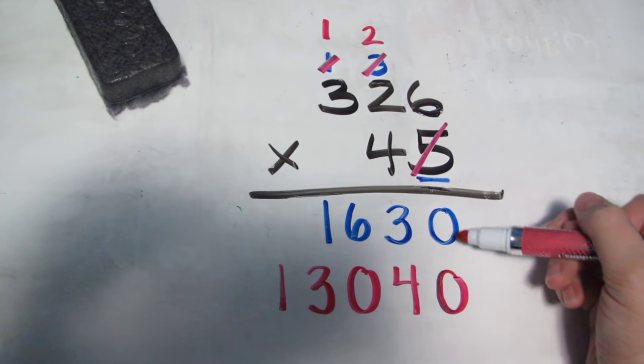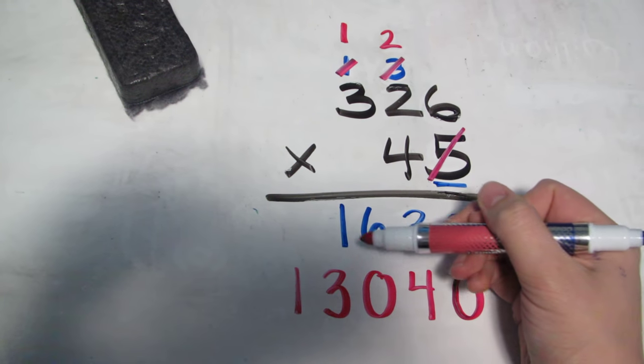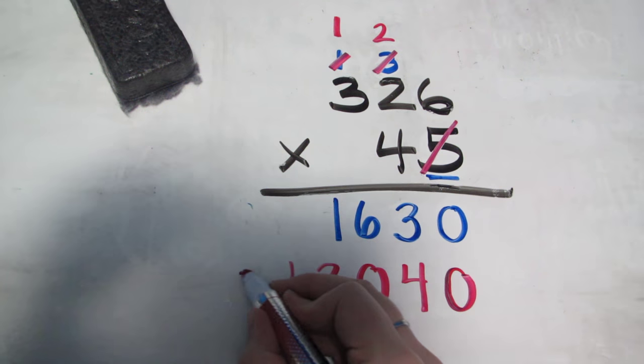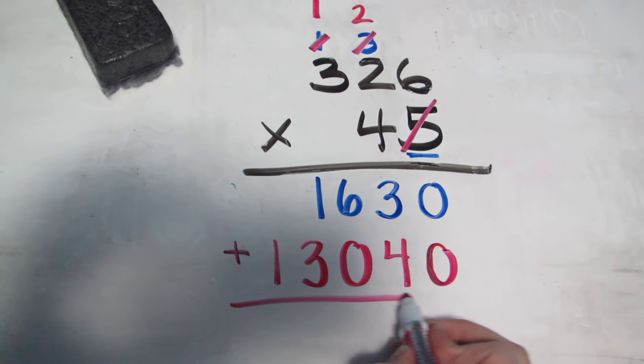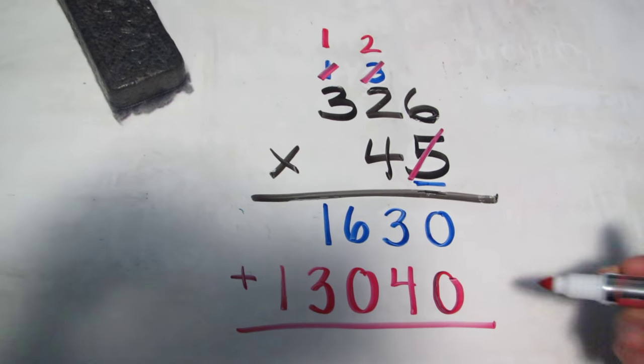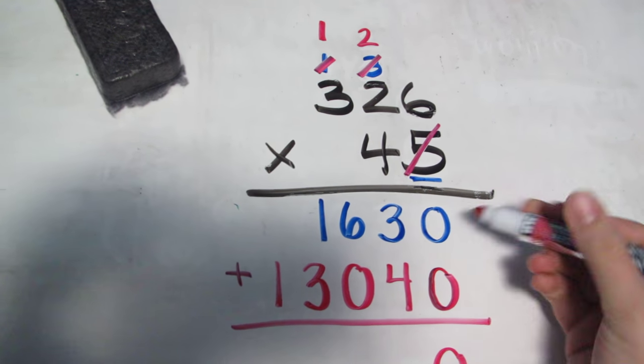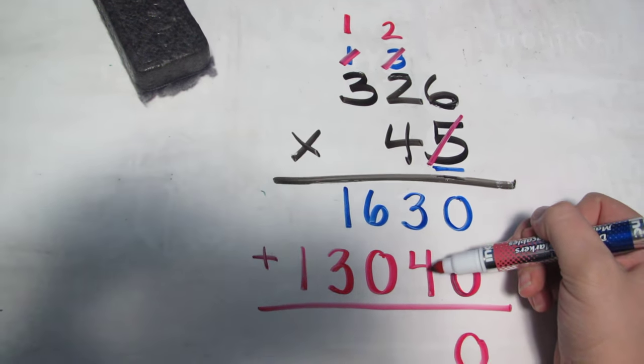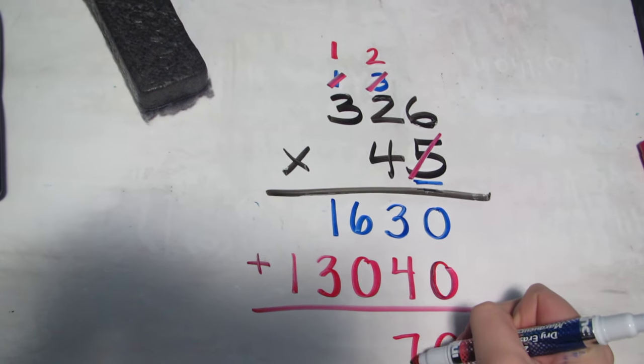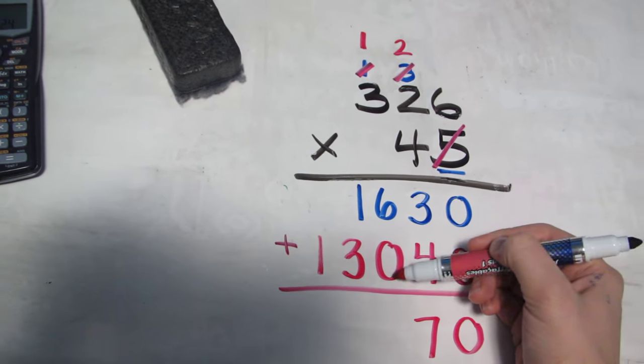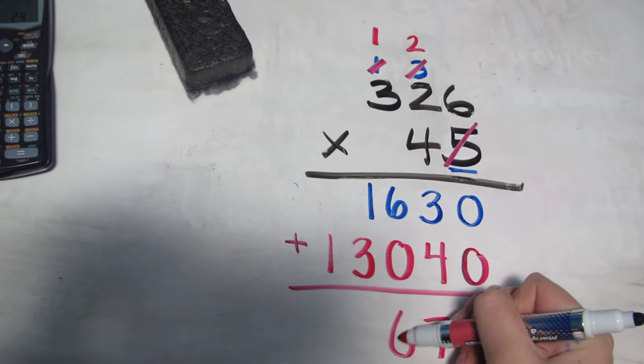And notice again the whole time I kept my numbers lined up nicely. So when I get to the adding part, all I have to do is put it together. So 0 plus 0 is 0, 3 plus 4 is 7.